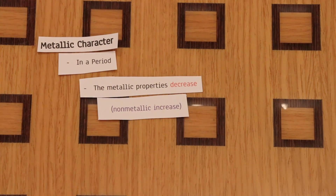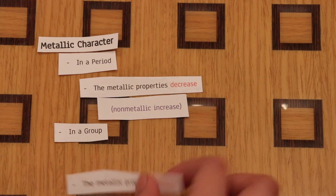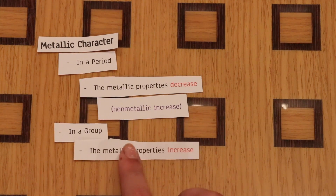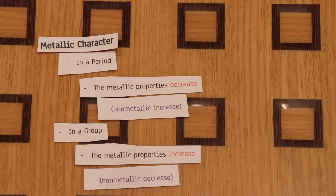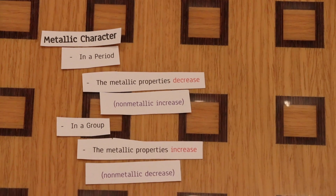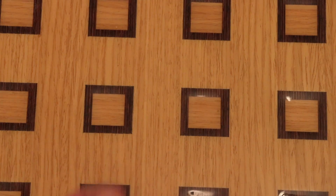Metallic character: in a period, metallic properties decrease, so non-metallic properties increase. While in a group, metallic properties increase, so non-metallic properties decrease.